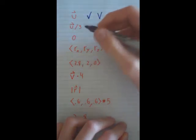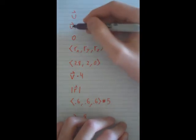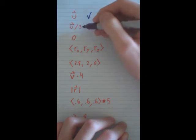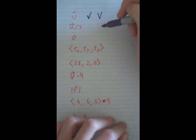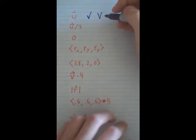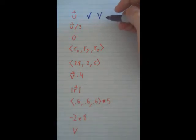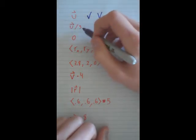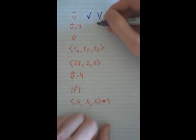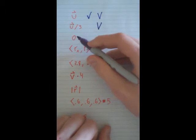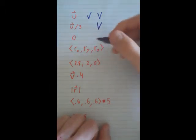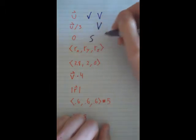This we have the same thing as this, a vector, but we have it divided by a scalar, scalar being three. And anything times or divided by a vector is a vector. So this over this is going to be a vector. Zero is just a scalar, so it's definitely not a vector. So I should write S for scalar.